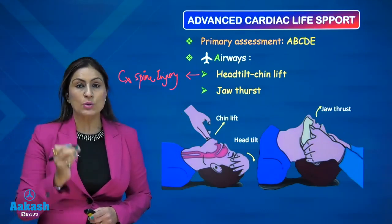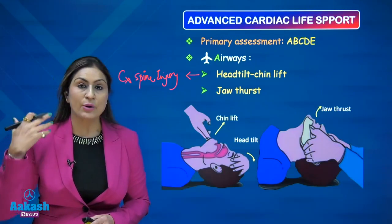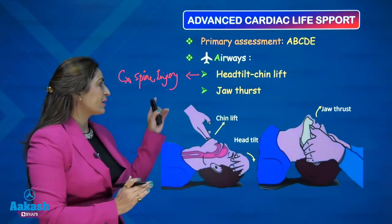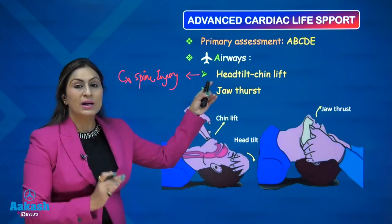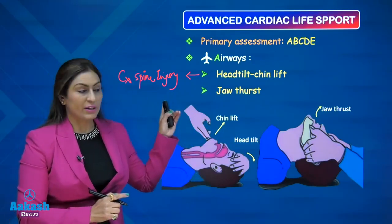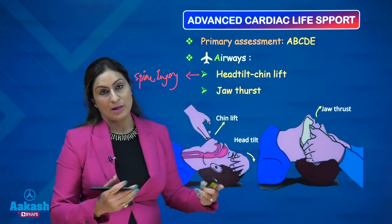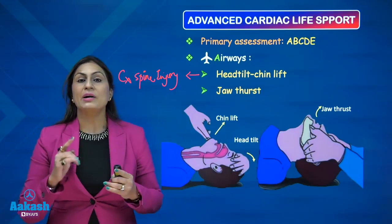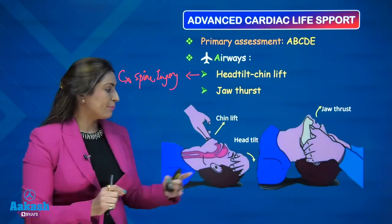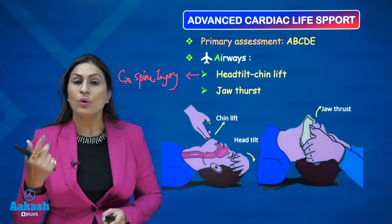Any patient who has multiple traumas — on the chest, head, and neck — we have to assume that the victim has a cervical spine injury and we will not use the head tilt chin lift manoeuvre. For a victim with cervical spine injury or multiple fractures, we use jaw thrust to open the airway. When we open the airway, we must also assess it for any foreign body that might be obstructing the airway and contributing to cardiac arrest.